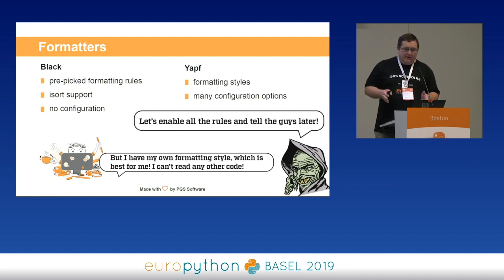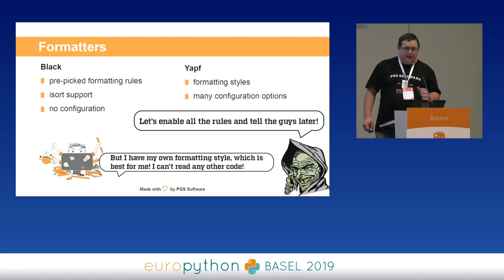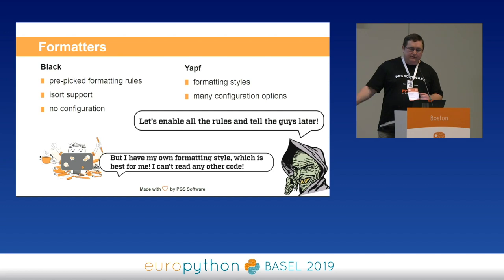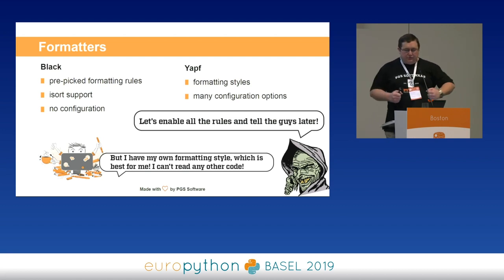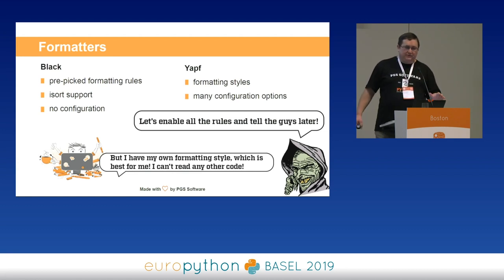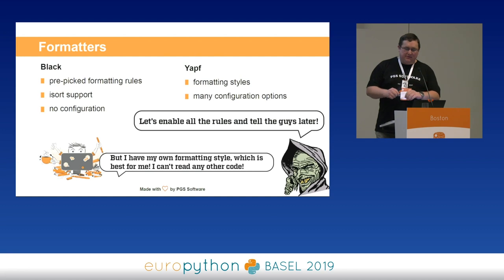There are two main formatter players I identified. First is Black. You know the quote by Henry Ford — your car can be any color you want, except it's black. That's how Black works: it has pre-picked formatting rules, no configuration at all, and it will format your code accordingly. On the other hand, you have YAPF, written by Google, and YAPF is very configurable. But the drawback is that if you gather your fellow developers and say 'let's write a configuration file for YAPF and pick the rules,' you're going to spend a month on it. So Black is a good default, but YAPF is a good choice if you really want to pick the right rules for your system.